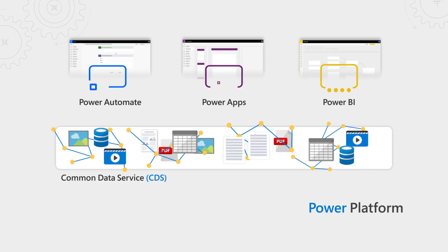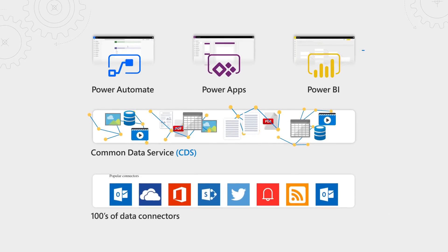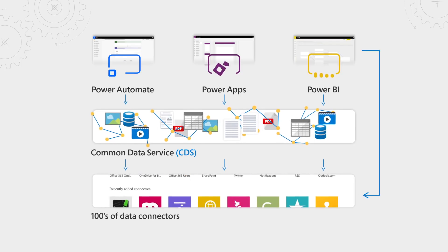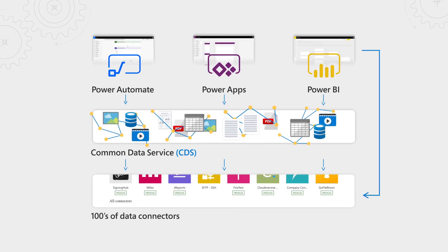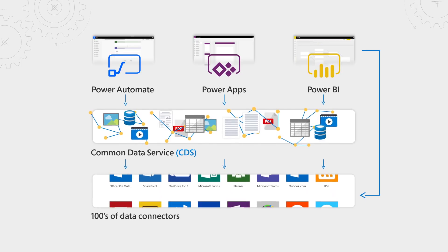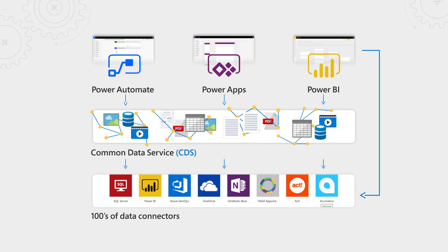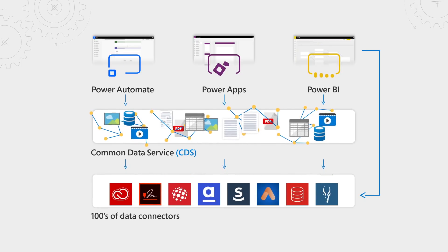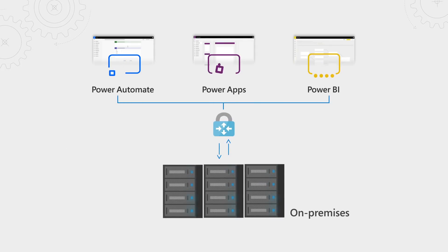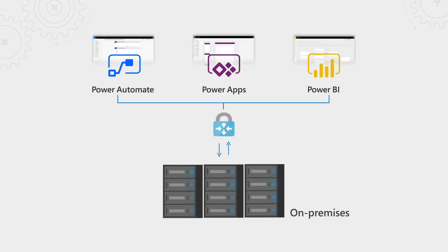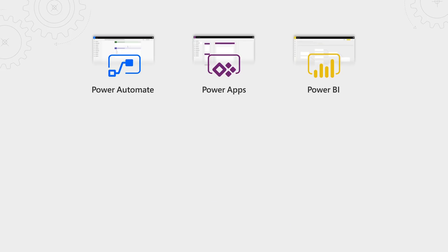On top of the Common Data Service, we have literally hundreds — over 280 different data connectors out of the box — so you can connect to all your existing systems without having to write any code at all, whether it's a Microsoft service, a database, or something from a competitor. A big part of that is also reaching on-premise using what's called the on-premise data gateway, which makes it easy to connect to things like a SQL server or SharePoint server configured on-premise without necessarily moving it to the cloud. You can start to transform it with something super modern and innovative like the Power Platform.